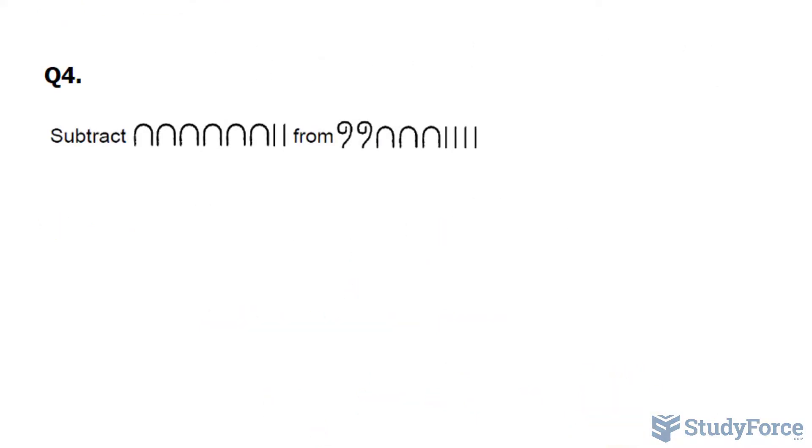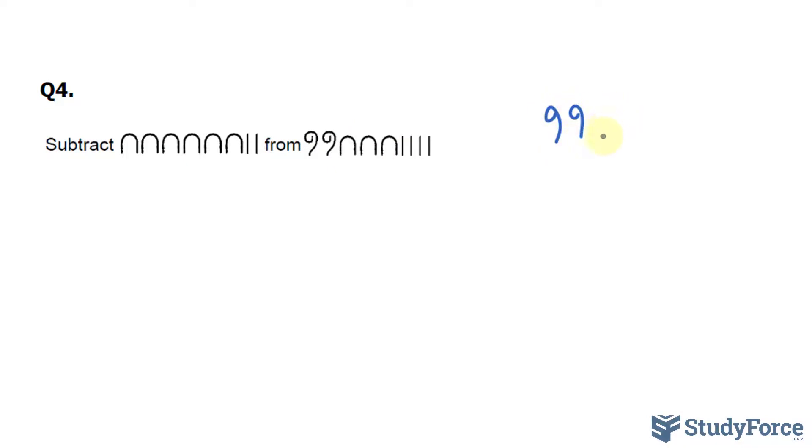Let's do one more question for good measure. This time, they want us to subtract this number from that number. So I'll begin by organizing my numbers, where I have these scrolls, 3 heel bones, and 4 strokes at the top, and this number, since it's being subtracted from this, at the bottom. So that's 6 heel bones and 2 strokes.